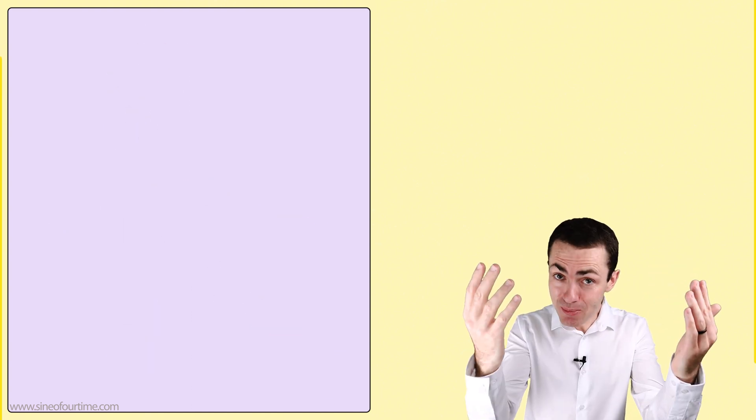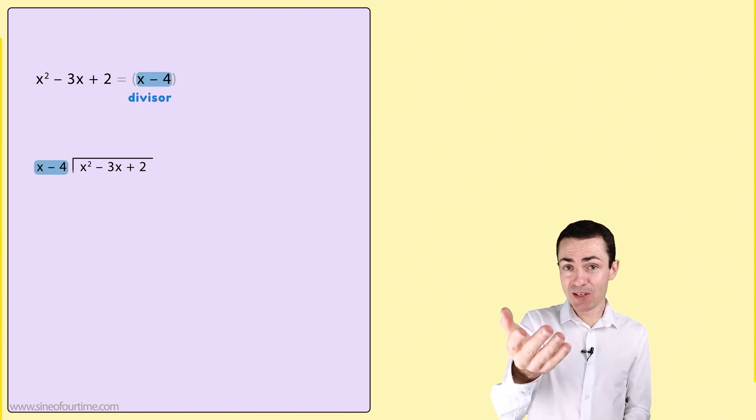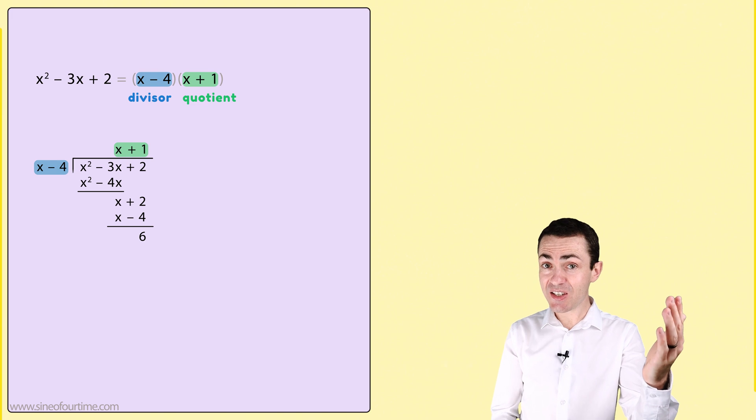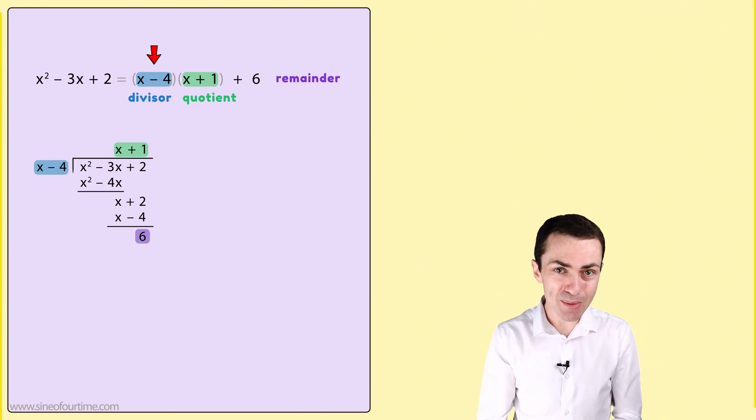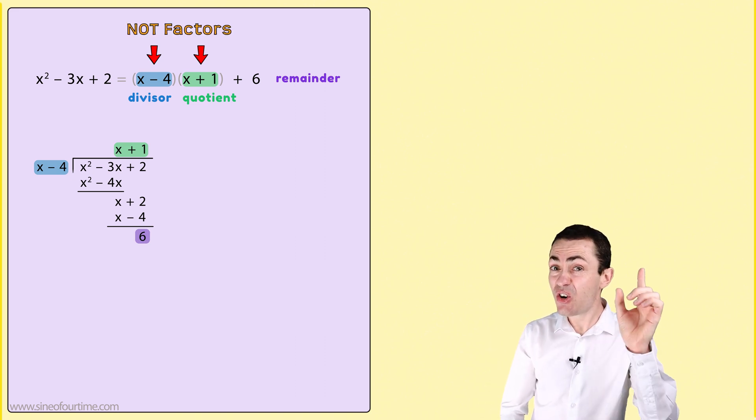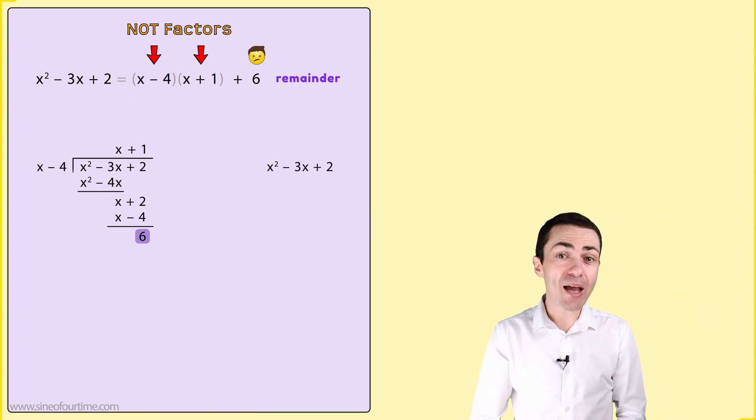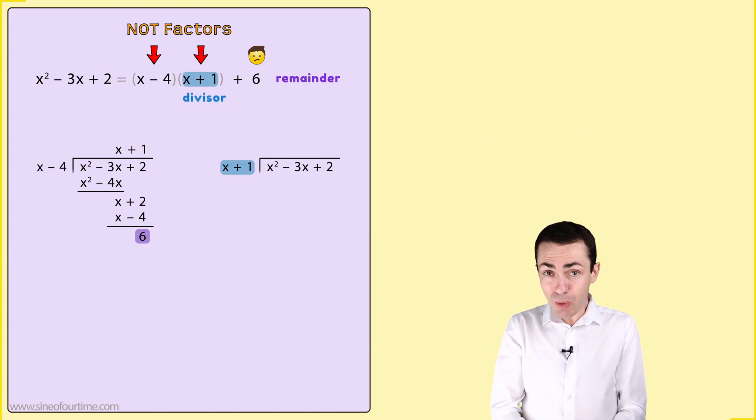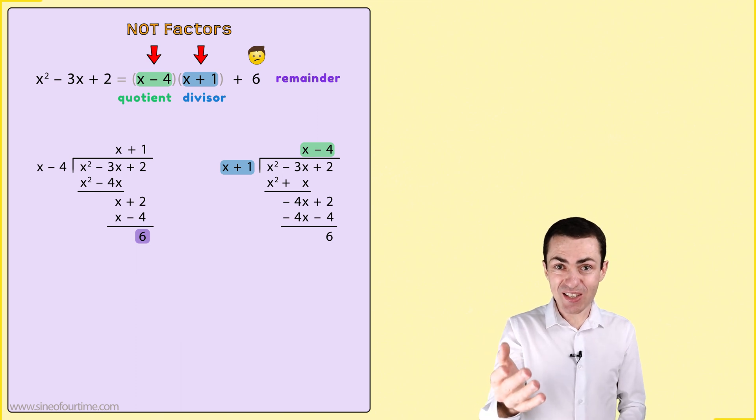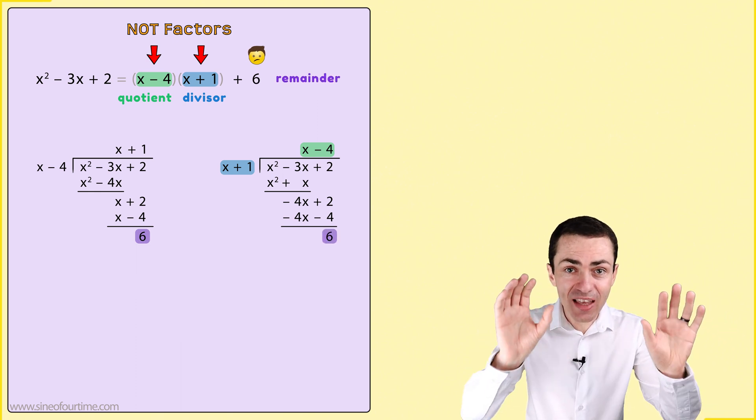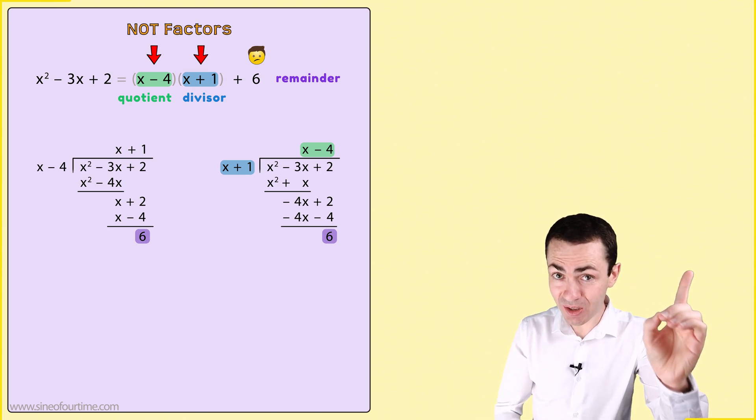If we take the same trinomial and divide it by x minus 4, the quotient turns out to be x plus 1 while the remainder turns out to be 6. Now we would not be able to call x minus 4 and x plus 1 factors since the remainder is not equal to 0. And likewise, if we take that same trinomial and divide it by x plus 1, the quotient turns out to be x minus 4 while the remainder turns out to be 6. Again, we cannot say that x minus 4 and x plus 1 are factors because the remainder is not equal to 0.